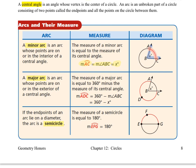A minor arc is an arc whose points are on or in the interior of a central angle, and the measure of a minor arc is equal to the measure of the central angle. That's why arc AC has the same measure as angle ABC.